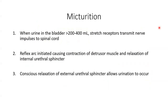When urine in the bladder exceeds 200 to 400 mL, stretch receptors transmit nerve impulses to the sacral spinal cord, going up to the micturition centre, initiating a reflex arc which causes contraction of the detrusor muscle and relaxation of the internal urethral sphincter. When the timing and place is right, we have conscious relaxation of the external urethral sphincter, which is made of skeletal muscle, and this allows urination to occur. That is all for the physiology of the urinary system — see you in the lab for a recap.